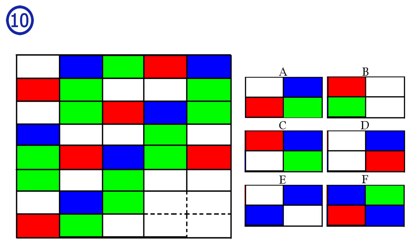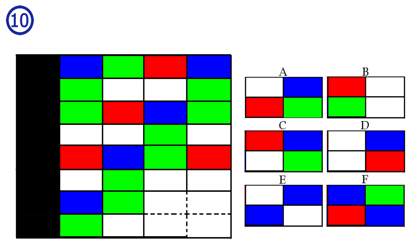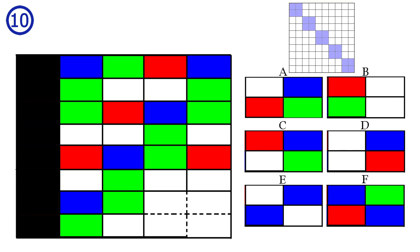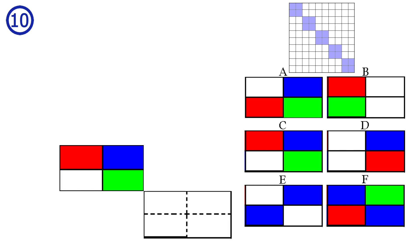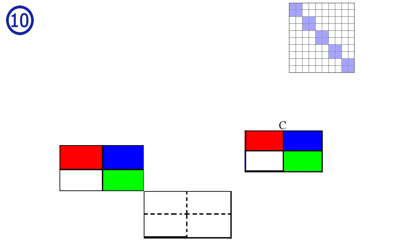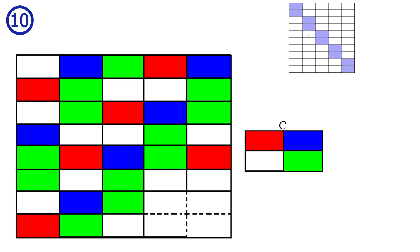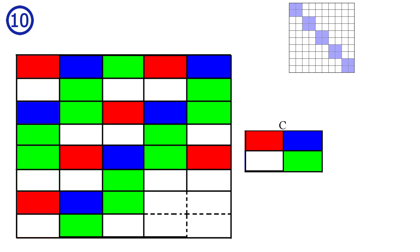Puzzle number ten. This one was a bit hard. I think the entire first column is wrong. If we just ignore the first column, then we have the same repetitions as earlier. To solve the puzzle, we look here and we see that answer C is correct. Before moving on, I want to fix this puzzle by shifting the first column up by one.